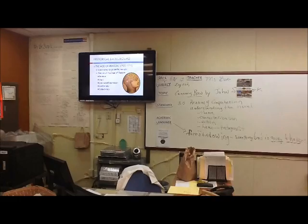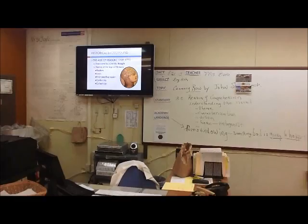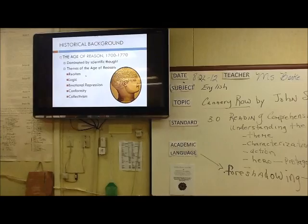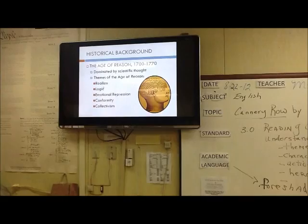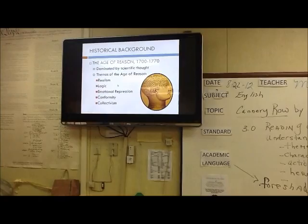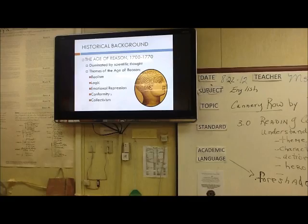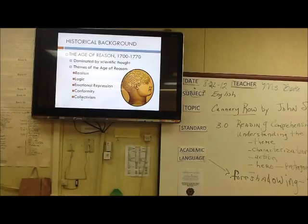The first period I would like to discuss is the Age of Reason, which was from 1700 to 1770. As you see here, there's a picture of a woman's brain. The brain symbolizes the age of intellect, the age of reason — those were some of the themes that dominated this time. Authors did not write about fantasy and love and imagination; they wrote about what was real and what was logical. They repressed their emotions because these were the rules and conventions of authors that existed during this time. The authors conformed to the rules of order. It was not an age of individualism — it was an age of collectivism, where everybody did things in a group way and the literature was all the same.